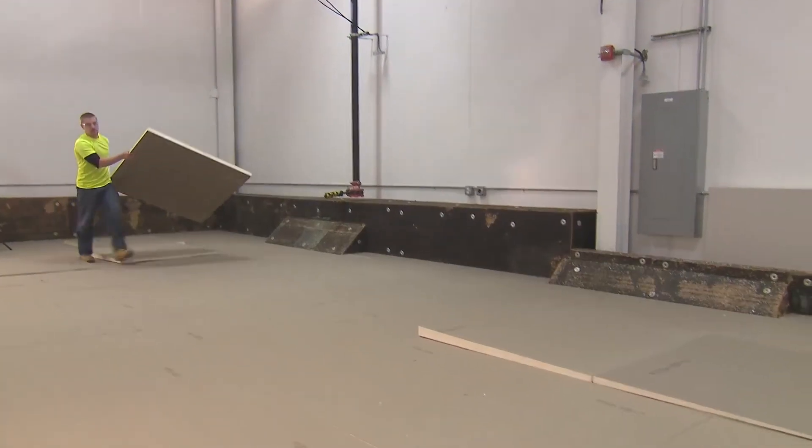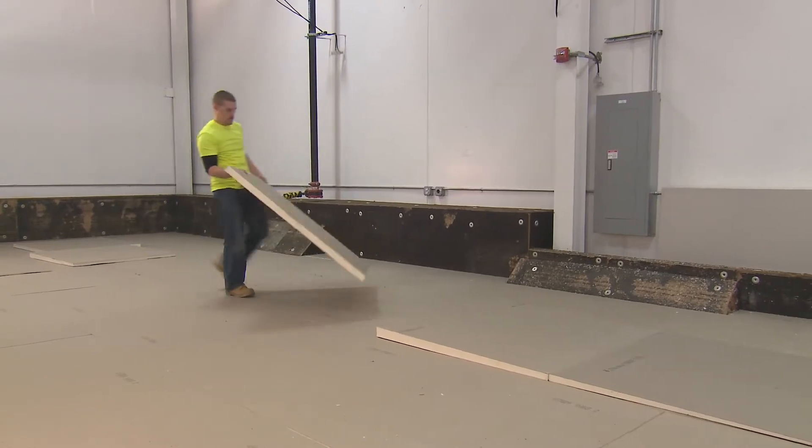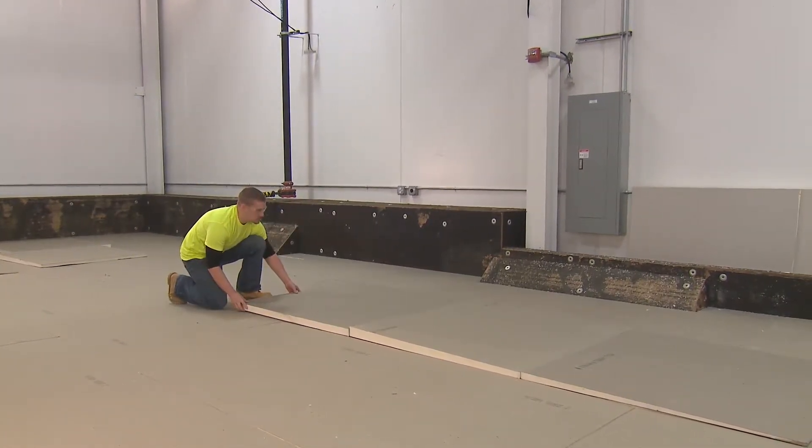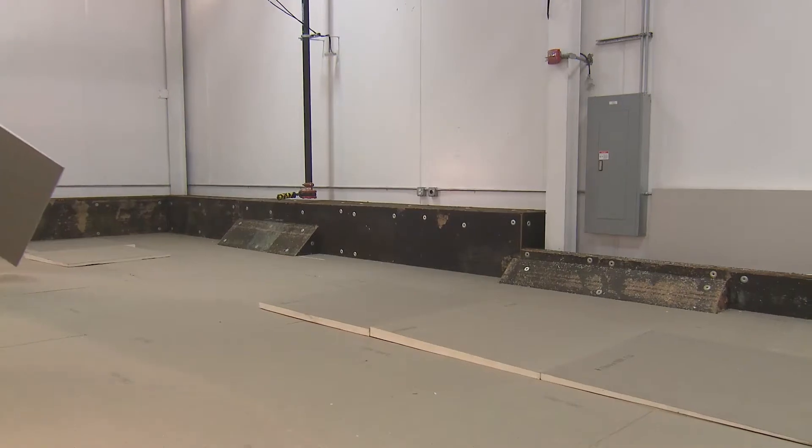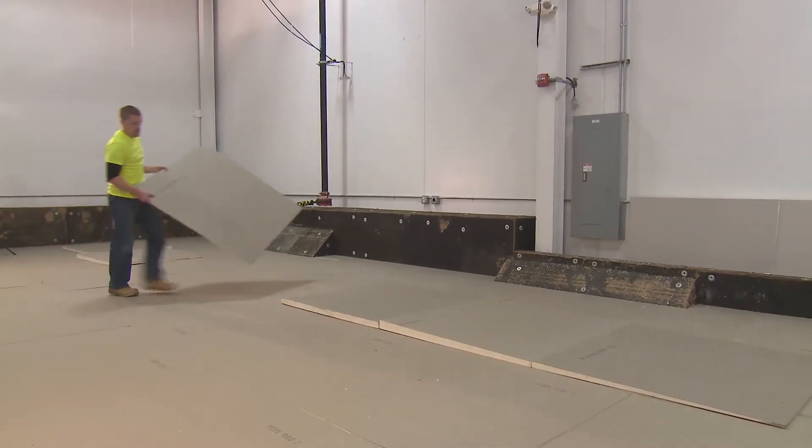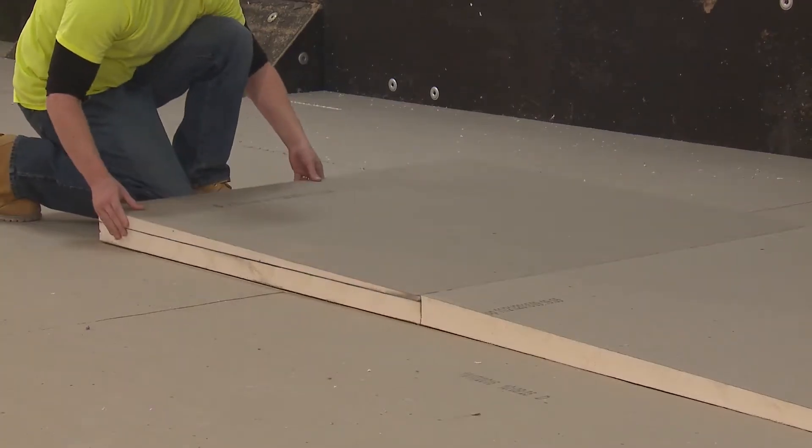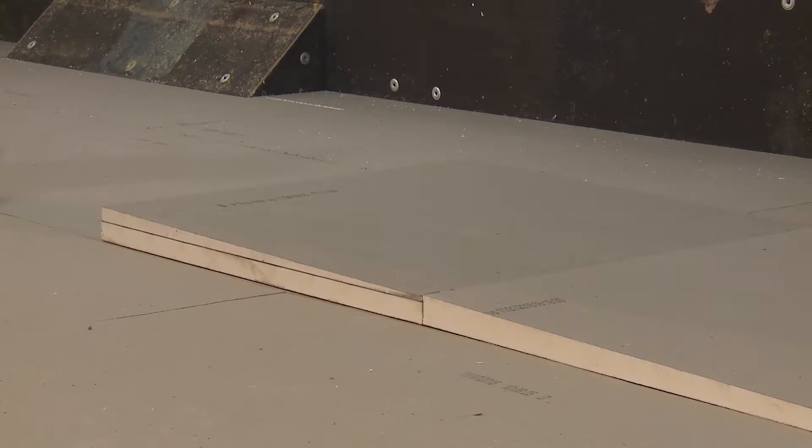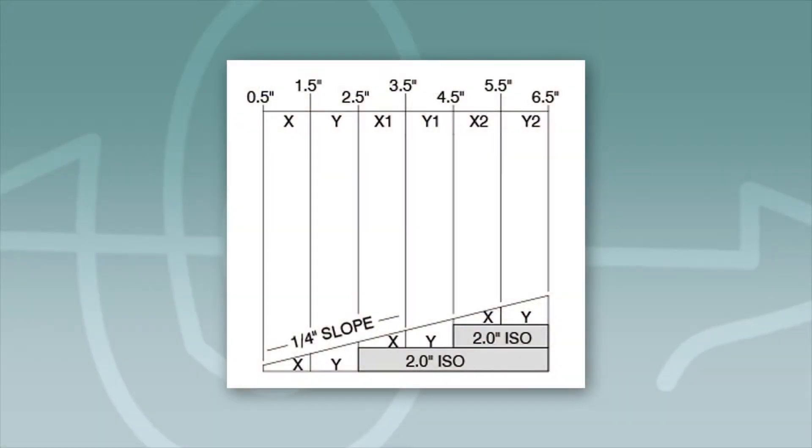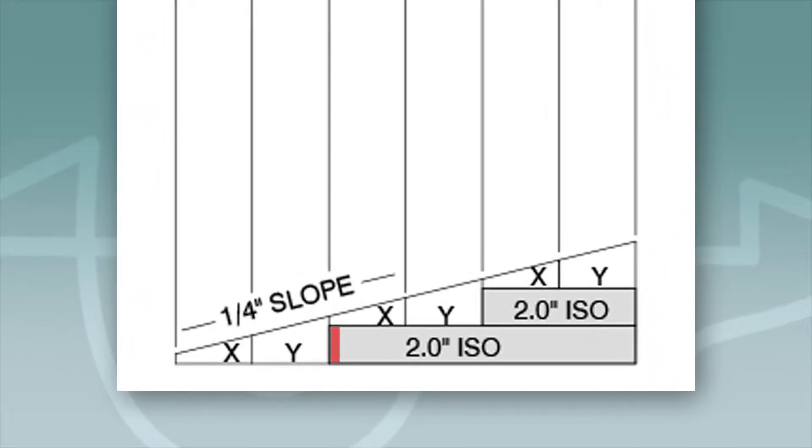We take our 2 inch flat poly-ISO board and snug it up to the 1.5 inch high side of our Y panel we installed. Next, we take an X panel and lay it over the flat piece of poly-ISO we just installed. The low side of the panel should be snug against the high side of the Y panel. In this instance, the 2 inch side of the flat panel plus the 0.5 inch side of the X panel match the height of the 2.5 inch side of the Y panel.